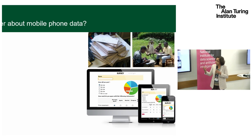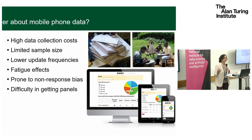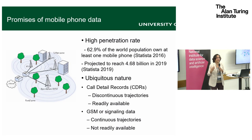Choice modelers have traditionally relied on surveys where we got all this information readily, but surveys have problems: the samples are limited, they are expensive to collect, and there are all sorts of measurement errors and reporting errors. This has led to the popularity of looking at new sources of data for developing choice models.